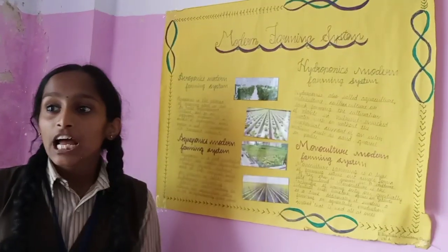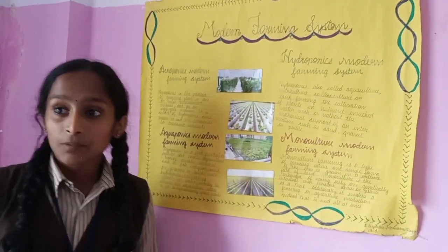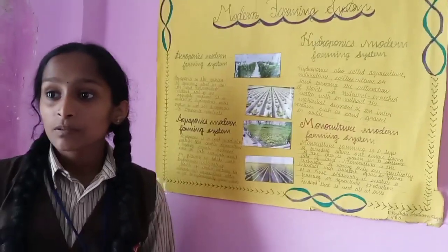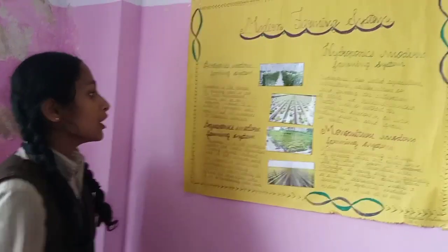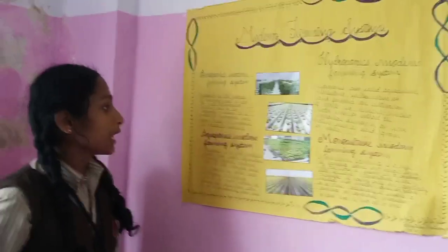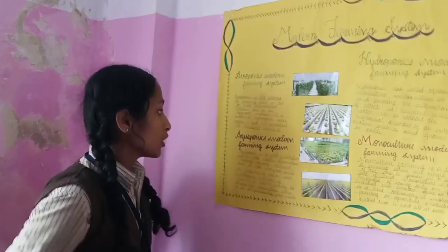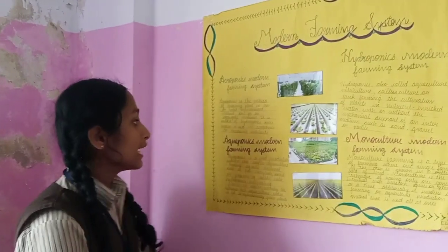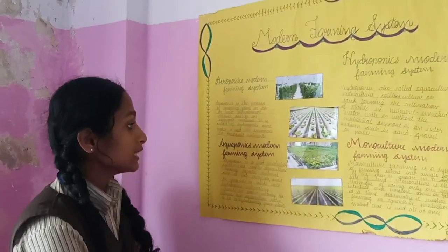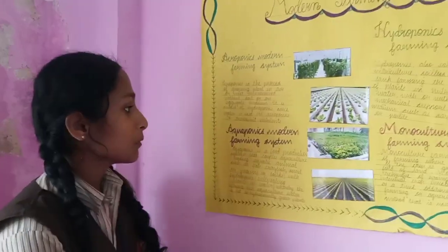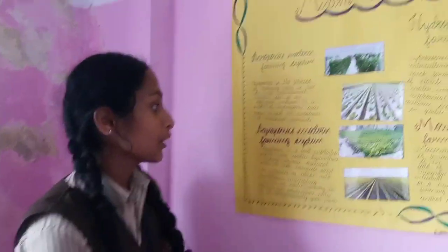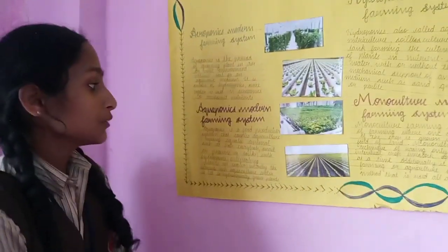Hi, I am Elisabeth. I am going to introduce some modern farming systems. The word modern farming means new technologies, techniques, and science of crop production. Aeroponics is a process of growing plants in the air or a mist environment without soil or any growing medium. It is a subset of hydroponics. Water is used in aeroponics to transmit nutrients.